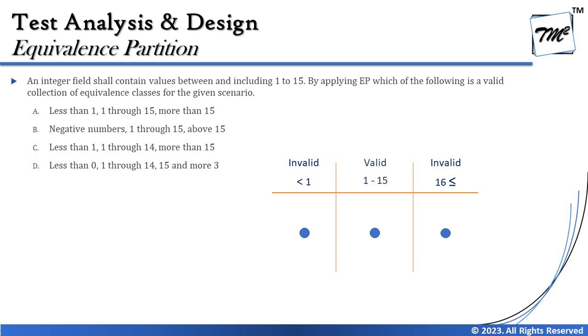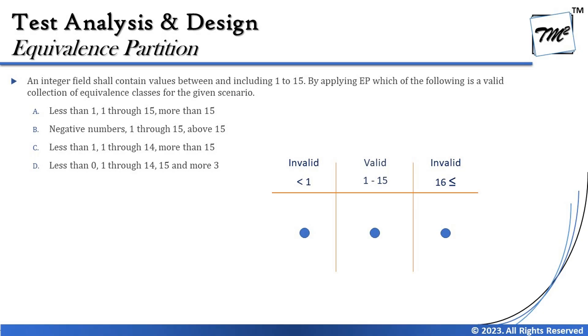We create the same table: less than 1 (invalid), 1 to 15 (valid), 16 and greater (invalid). Now examining the options: Option A says less than 1, 1 through 15, and more than 15 — looks absolutely fine. Option B says negative numbers, 1 through 15, and above 15 — many people pick this, but less than 1 includes zero, which is also an integer, so B is incorrect.